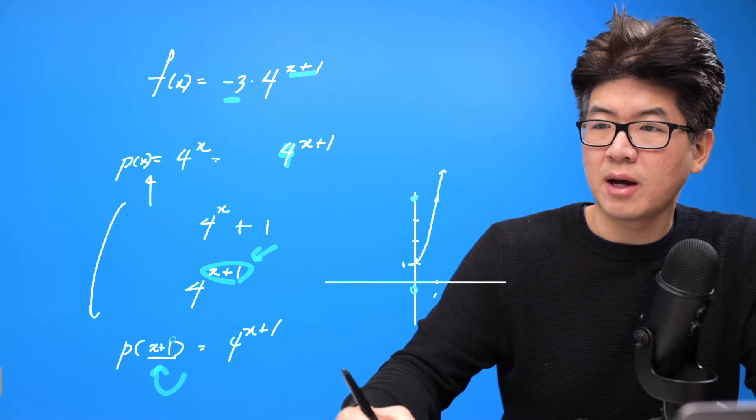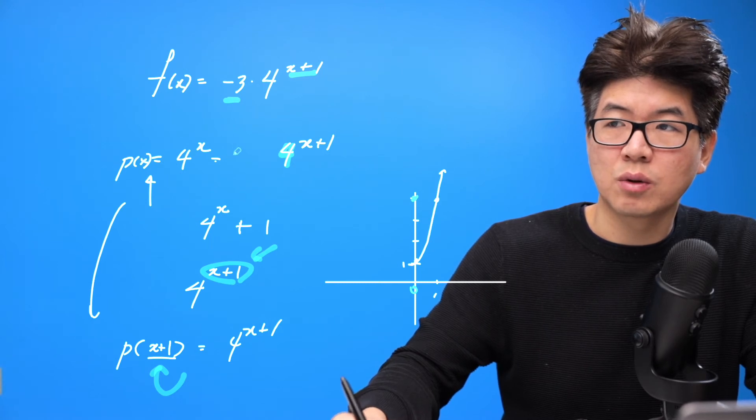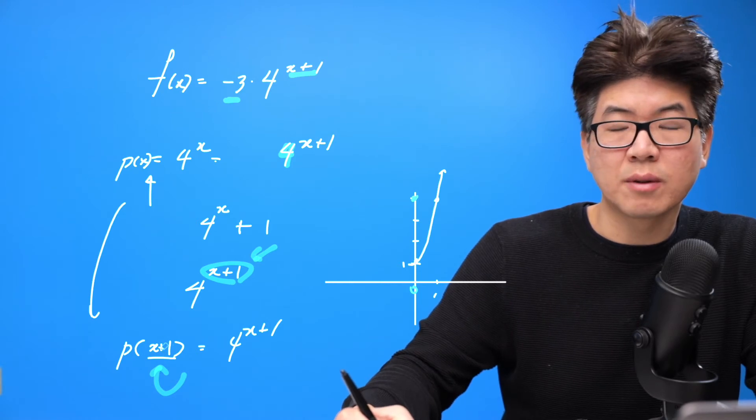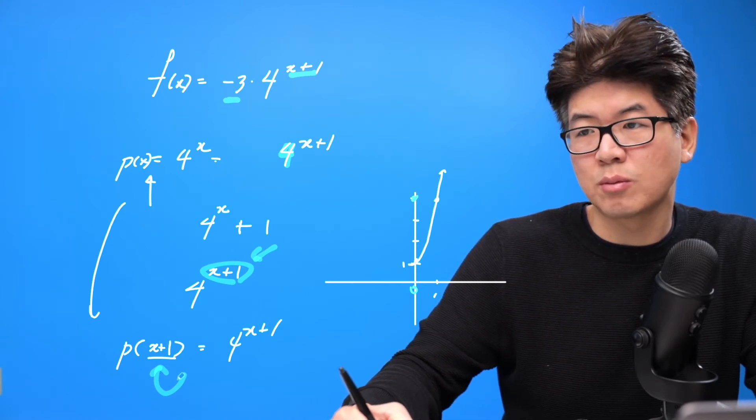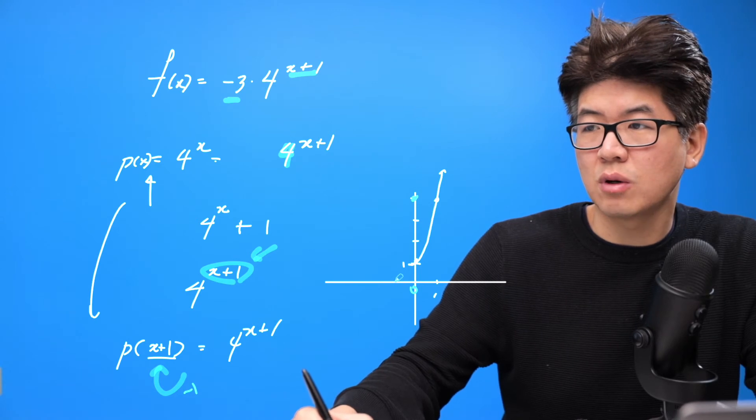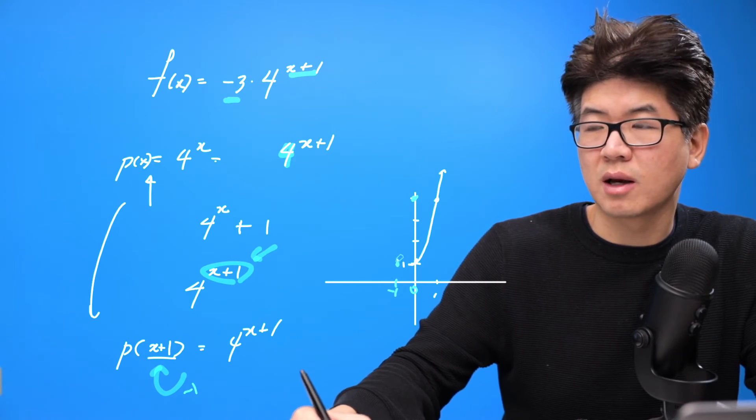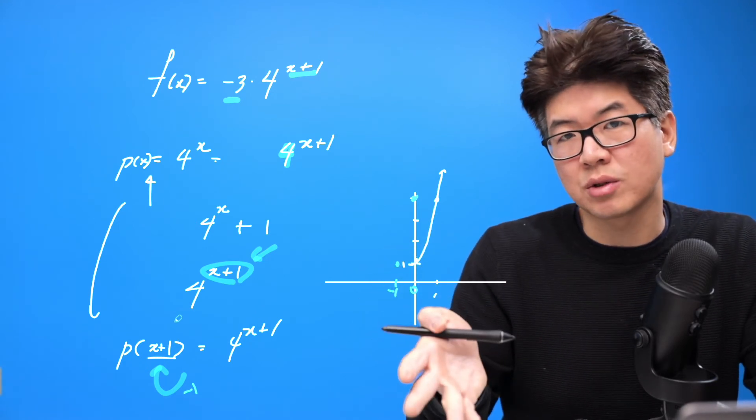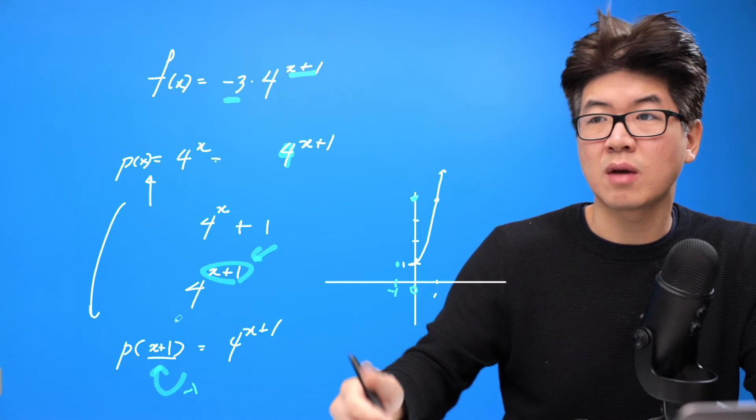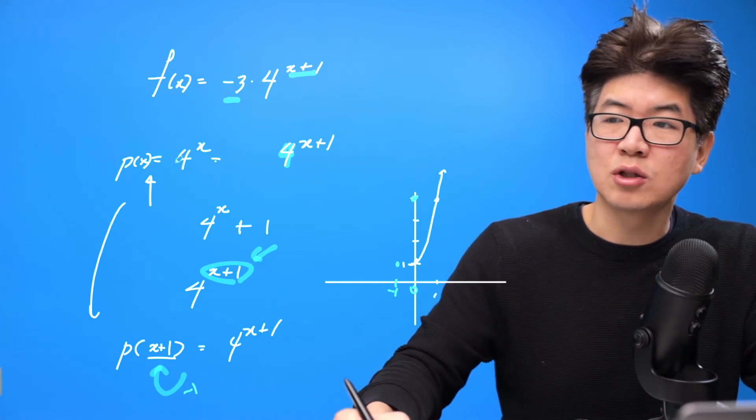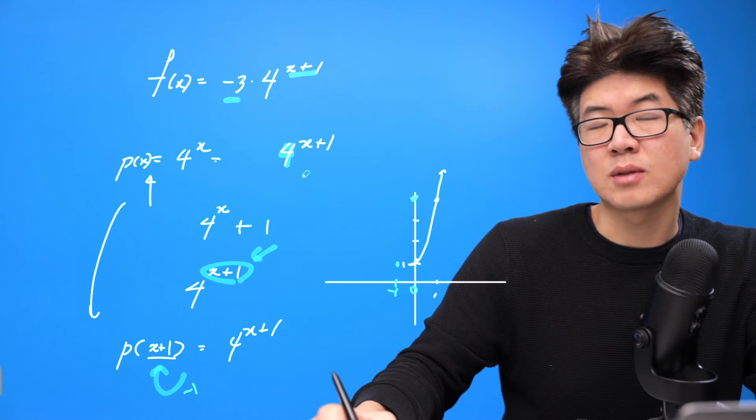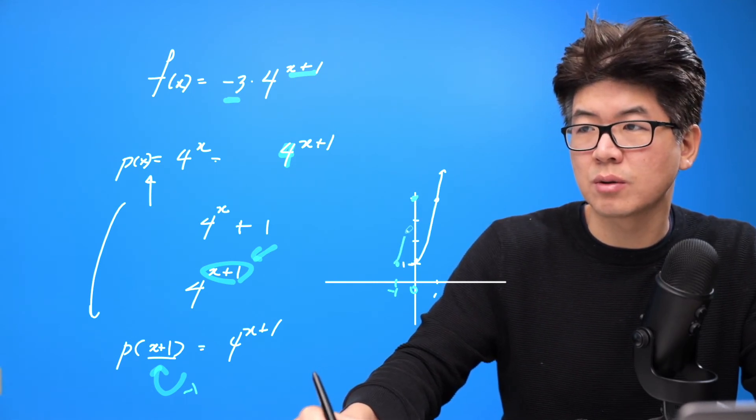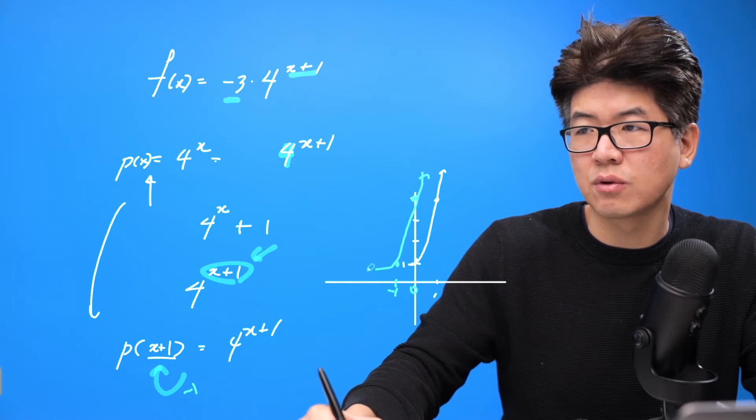Instead of zero, I need to plug in right here, if you put zero, you get right, four to the power of zero is one, that one value. Because of the plus one, we actually need to plug in negative one. So at negative one, right, we get that, right, because there's that x plus one algebra expression, all the x value we need to put in to get the same y value as the parent function needs to be exactly one less. That's why it happens in the opposite way for horizontal transformation. Okay, so like that. Of course, it'll approach like that.